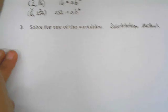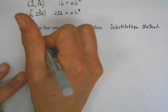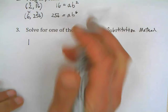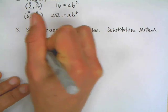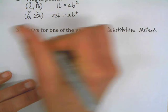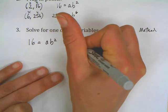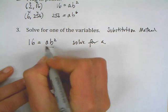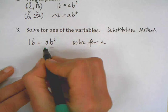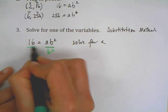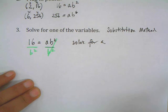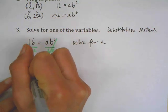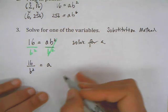I'm going to write down my equations again. I have 16 equals ab^2, and I'm going to solve this first one because it's dealing with smaller numbers, so it's going to be maybe a little bit more manageable. I'm going to solve for a, so I'm going to divide both sides by b^2. The b^2 cancels out here, so I have 16 over b^2 is equal to a.